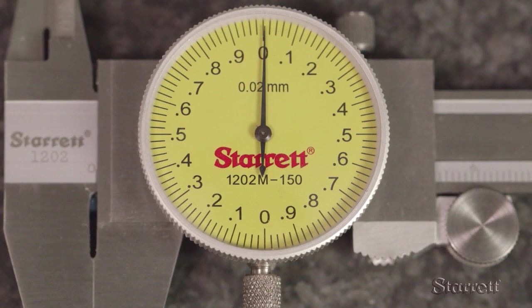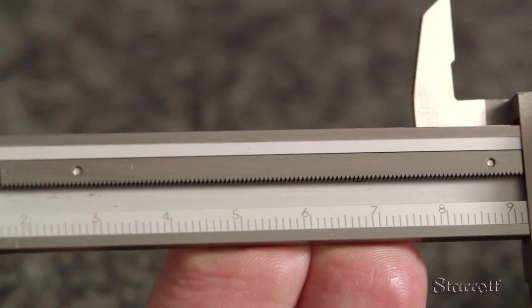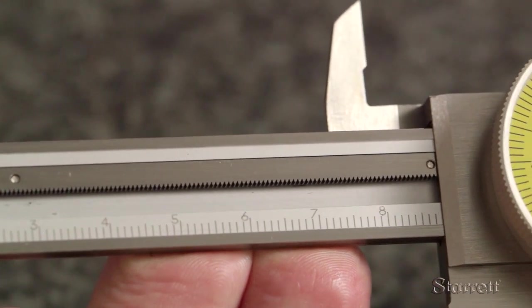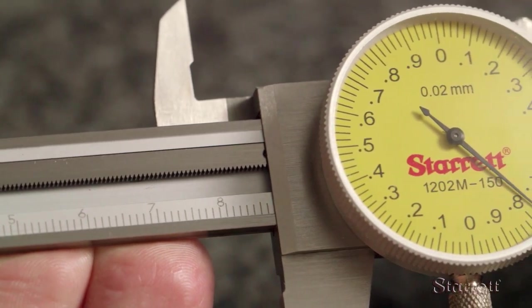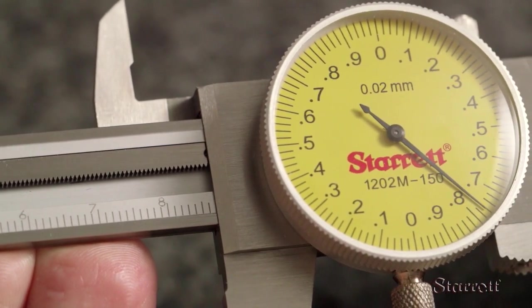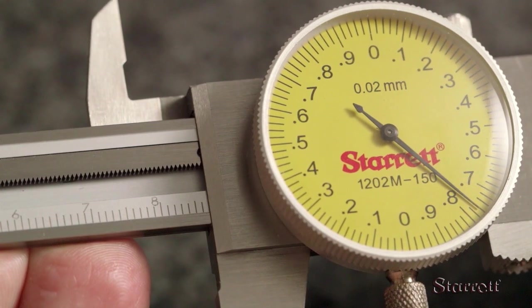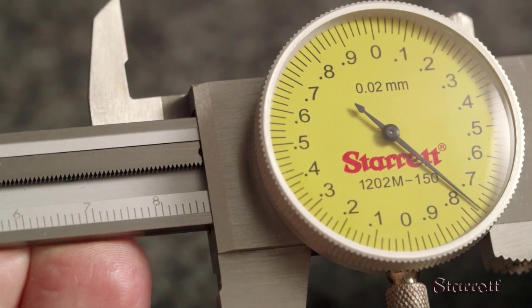Now let's do the same measurement to get the metric value. The 6th line after 8 is the last increment visible on the bar scale. The dial is on the third line after the 0.7 on the right side of the dial face, so the reading is 86.76 millimeters.